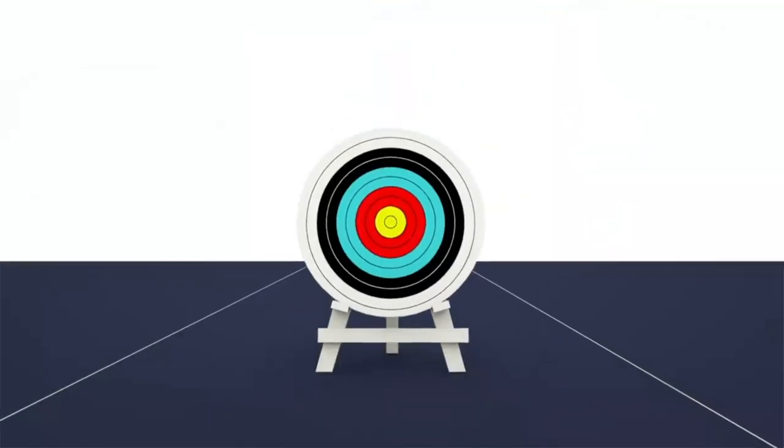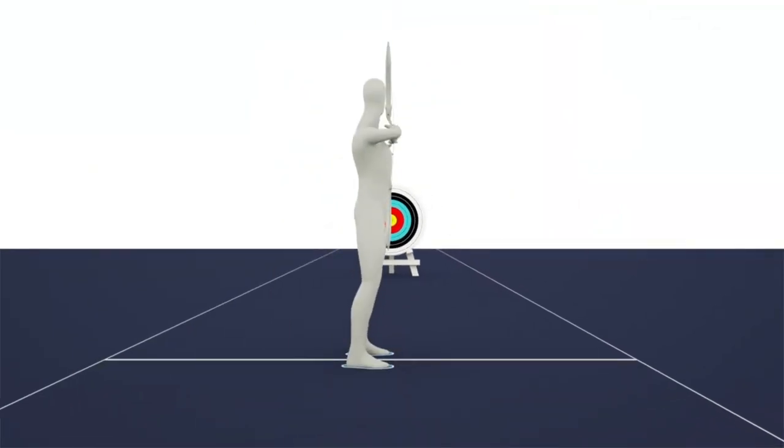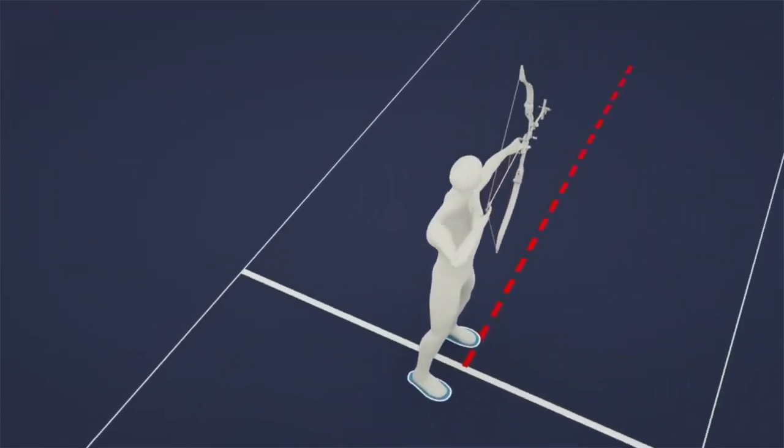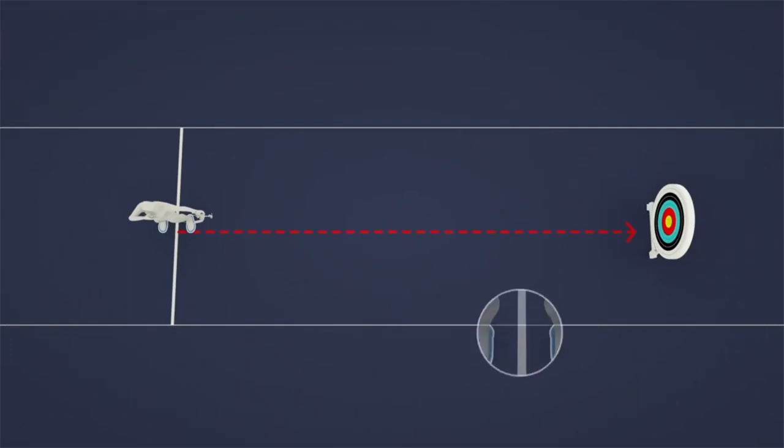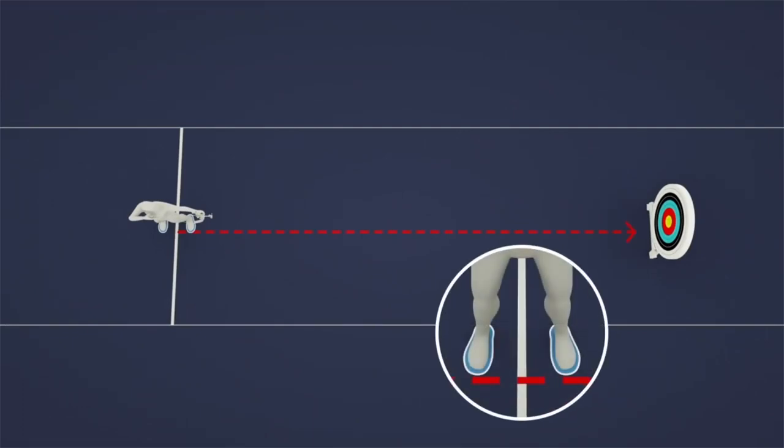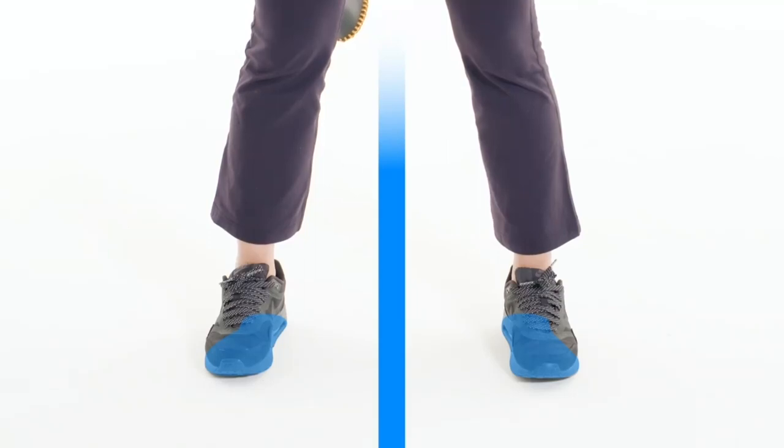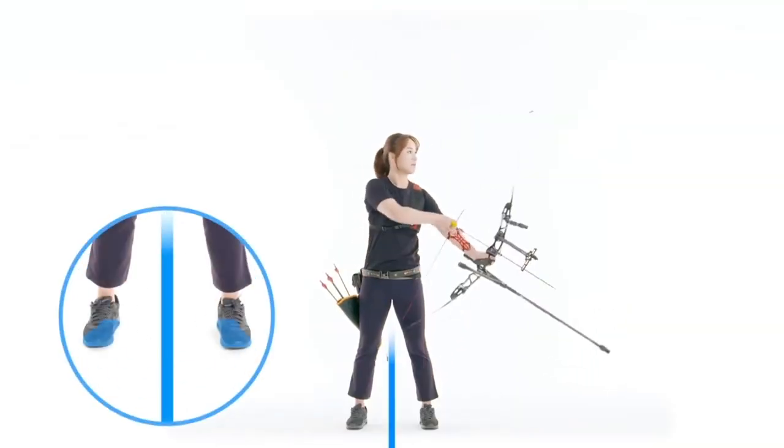Square stance is used to set an archer's basic posture. Imagine a line coming from the centre of the target perpendicular to the shooting line. The centre of the archer's feet should be placed on that line, either side of the shooting line. The distance between their feet should be no wider than the width of their shoulders.